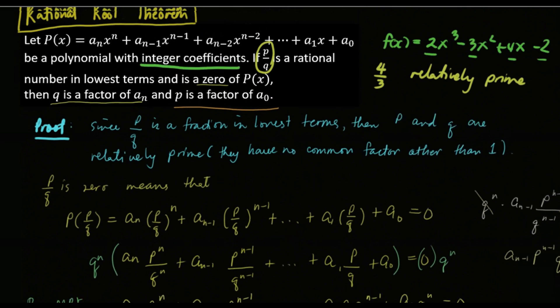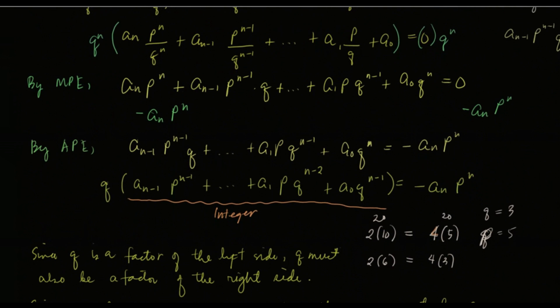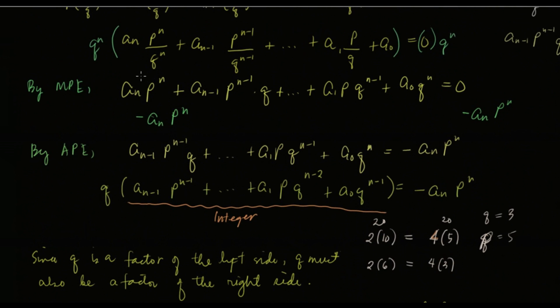I'm going to talk about the second part of the proof of the rational root theorem. We proved that q is a factor of a sub n. Now, we're going to prove that p is a factor of a sub zero.